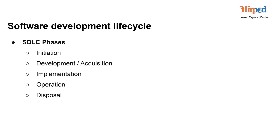The journey begins with Initiation, where we define the purpose and scope of the software. Then we move to the Development Acquisition Phase, where the actual creation or acquisition of the software takes place. The Implementation Phase sees the software come to life — like the moment when an artist's sketch takes shape on the canvas. Next, we enter the Operation Phase, where the software is deployed and maintained. Finally, the Disposal Phase marks the end of the software's lifecycle, ensuring its retirement is just as secure as its inception.